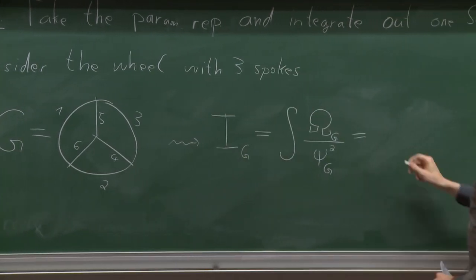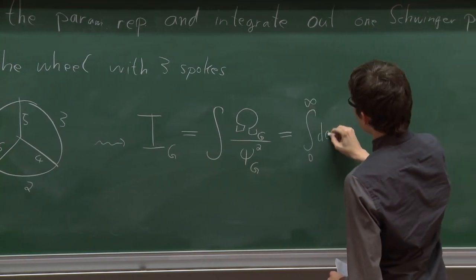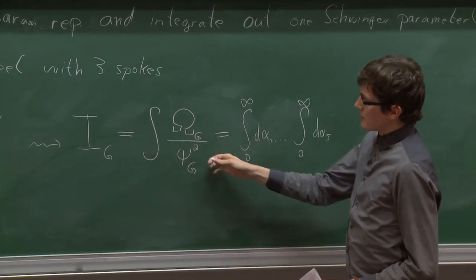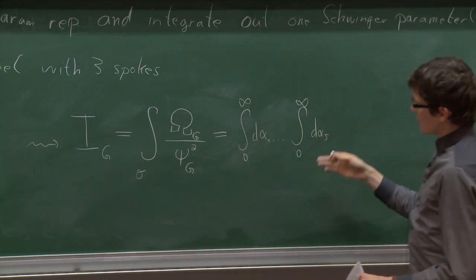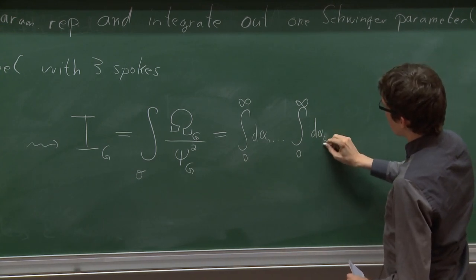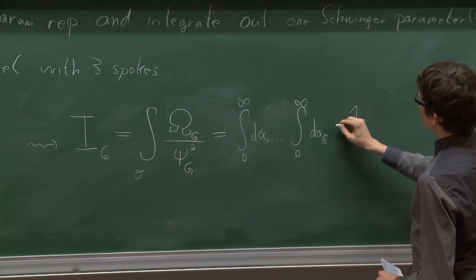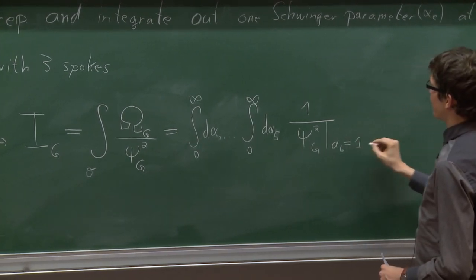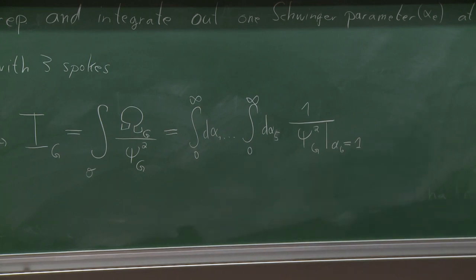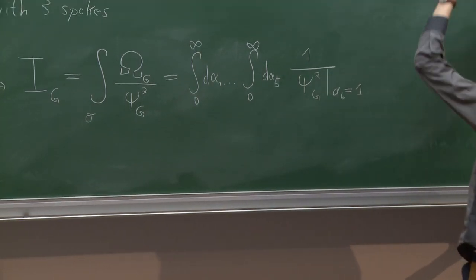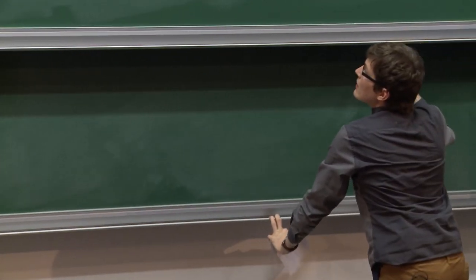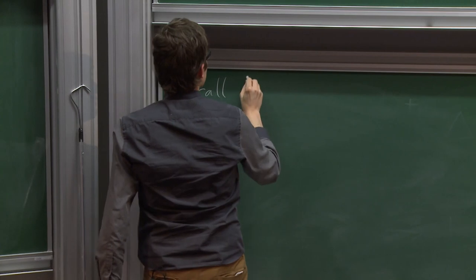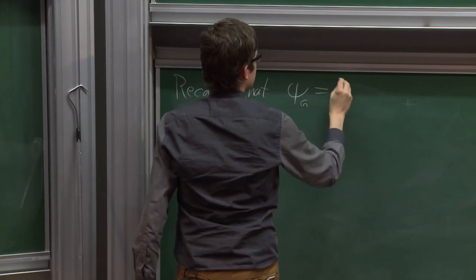Because it's logarithmically divergent in four dimensions, it has a residue which I denote by I. This graph is just the integral over omega_G divided by the square of the graph polynomial, the first Symanzik polynomial. We just have to integrate from zero to infinity all the Schwinger parameters. Because this is a projective integral, we can restrict to an arbitrary hyperplane — I will set alpha_6 to 1.